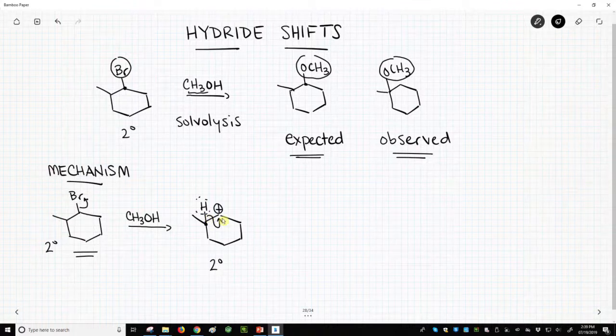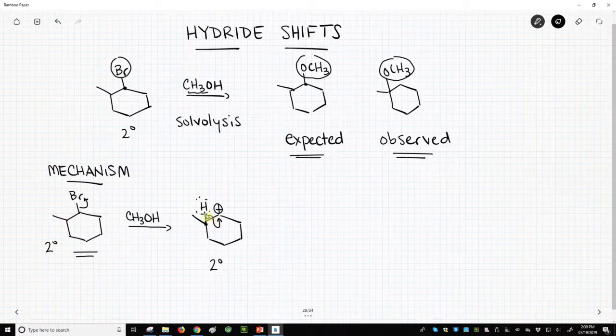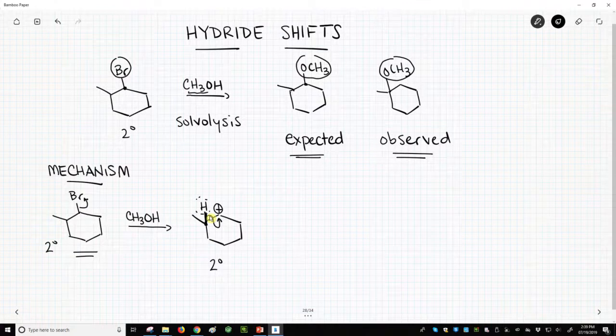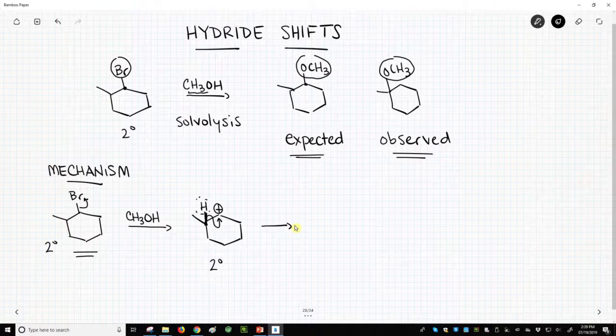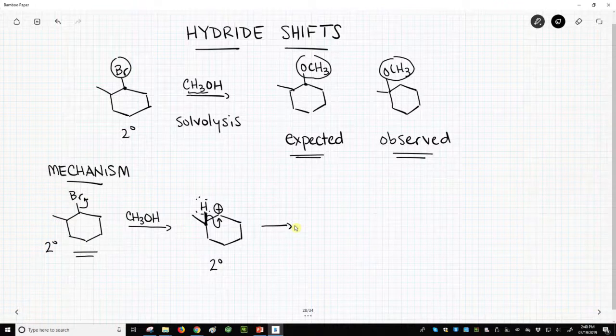Remember, in the mechanism, we're moving the electrons, and so this arrow starts at this carbon-hydrogen bond because those electrons are going to move. Along with those electrons, we're moving the hydrogen as well - the hydrogen and its electrons together. A hydrogen with a lone pair is called a hydride, so we call this a hydride shift.